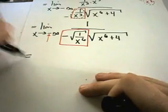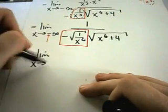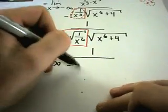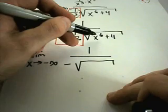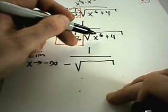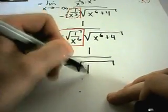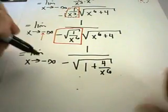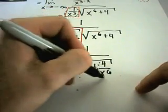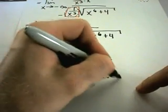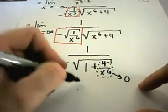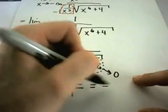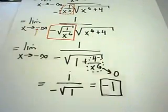Alright, so let's keep going from here. Now it's just exactly the same as the last problem. You've got 1. My negative is going to hang out front. If I distribute 1 over x to the sixth times x to the sixth, I'll get x to the sixth over x to the sixth, which is 1. Then I'll have 4 over x to the sixth. And as x goes to negative infinity, just like before, 4 over x to the sixth is going to become 0. I'm left with 1 over negative square root of 1. And my solution will turn out to be negative 1 in this case.